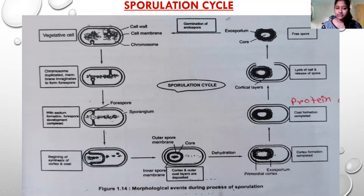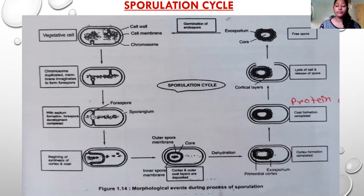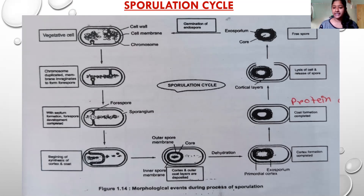Then septum formation occurs in the mother cell from the outside. A forespore is formed, which has only one membrane. In the fourth diagram, you can see engulfment — this is the small spore being engulfed by the mother cell. The cell membrane of the mother cell also gets attached to the outer layer of the spore, so the spore now has two membranes. Between these two membranes, the cortex is formed. When the cortex is formed, the mother cell's DNA gets degenerated during this process.